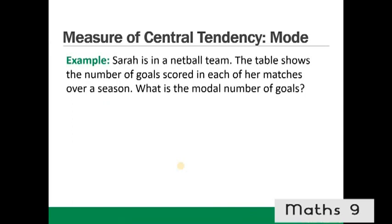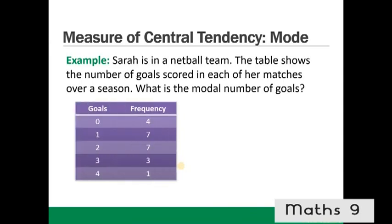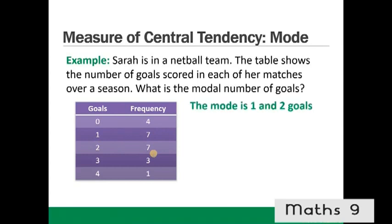Another example: Sarah is in a netball team. The table shows the number of goals scored in each of her matches over a season. What is the modal number of goals? We look at which number occurred most often — 1 goal was scored 7 times, and 2 goals was also scored 7 times. So the mode is 1 and 2 goals.